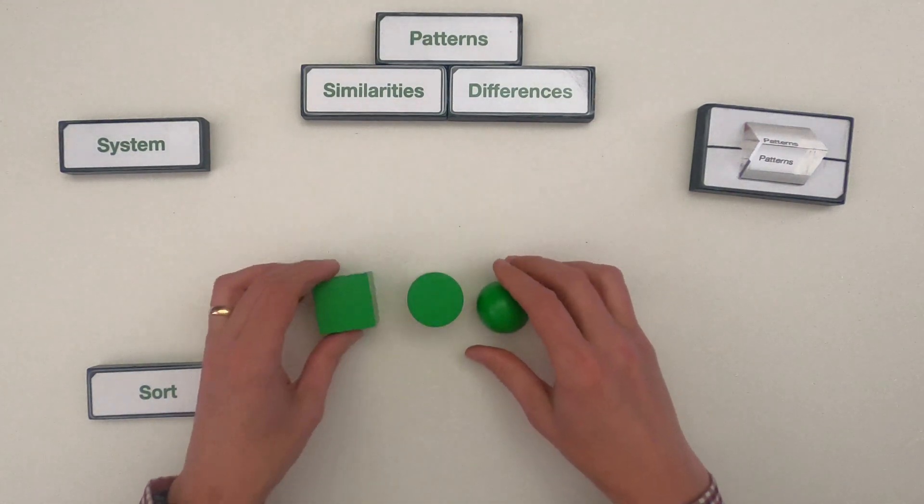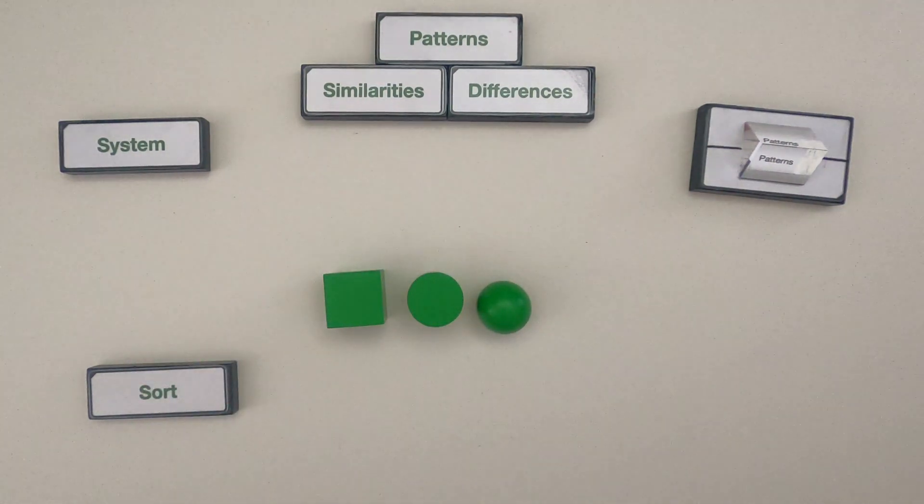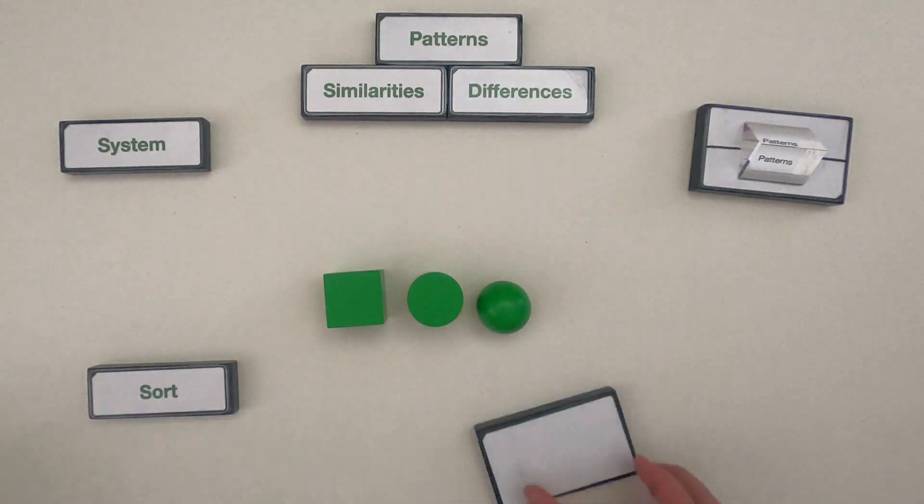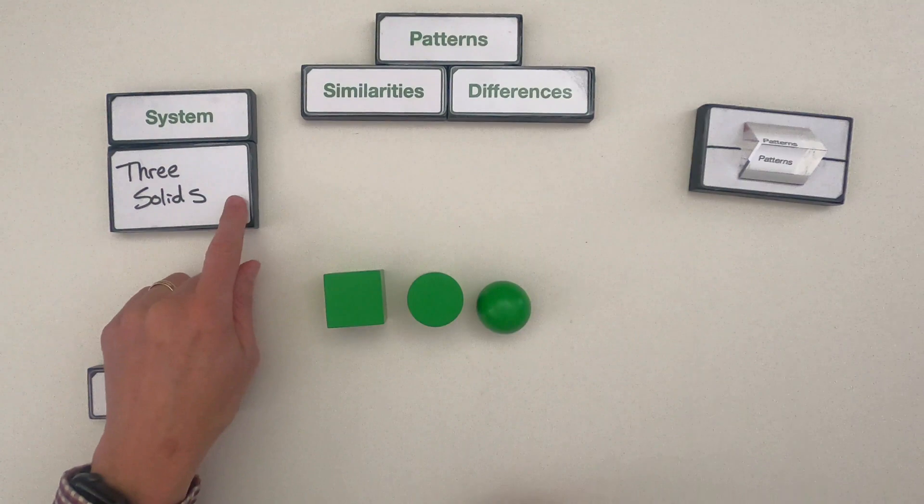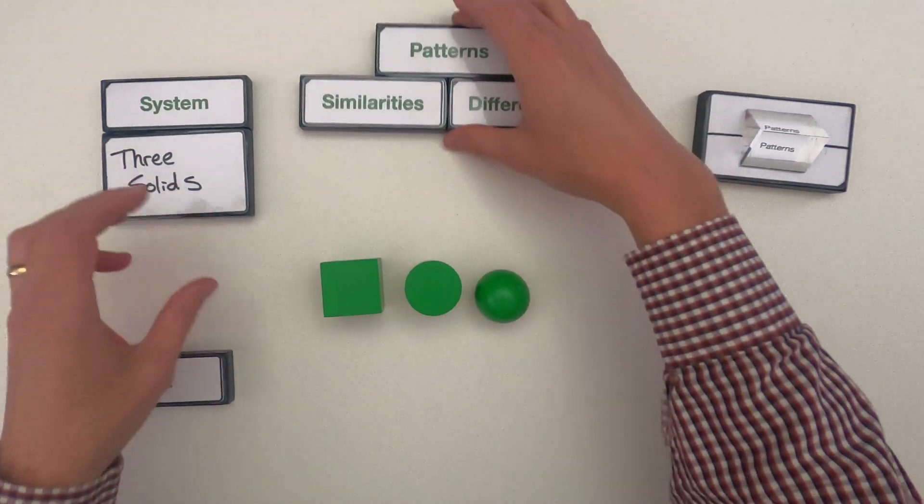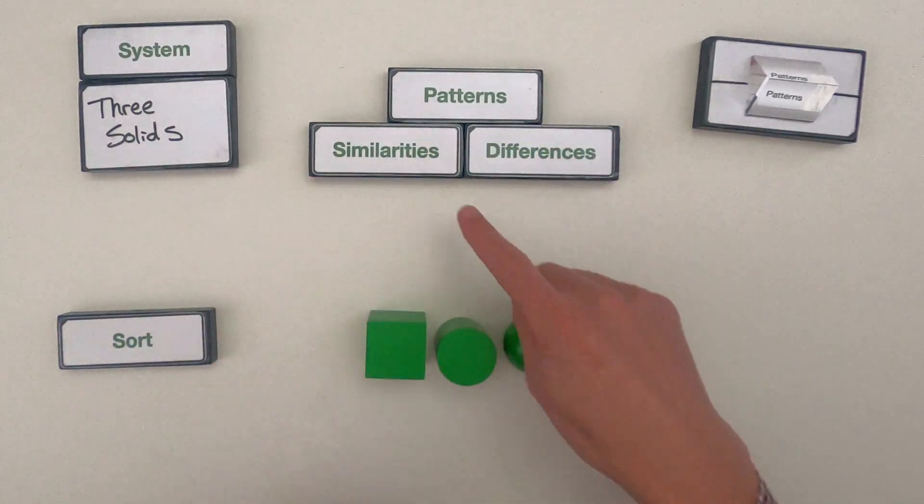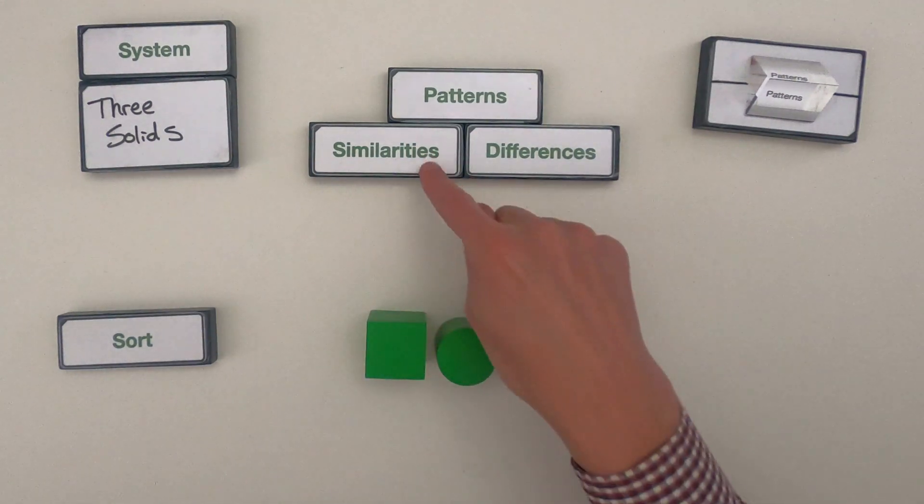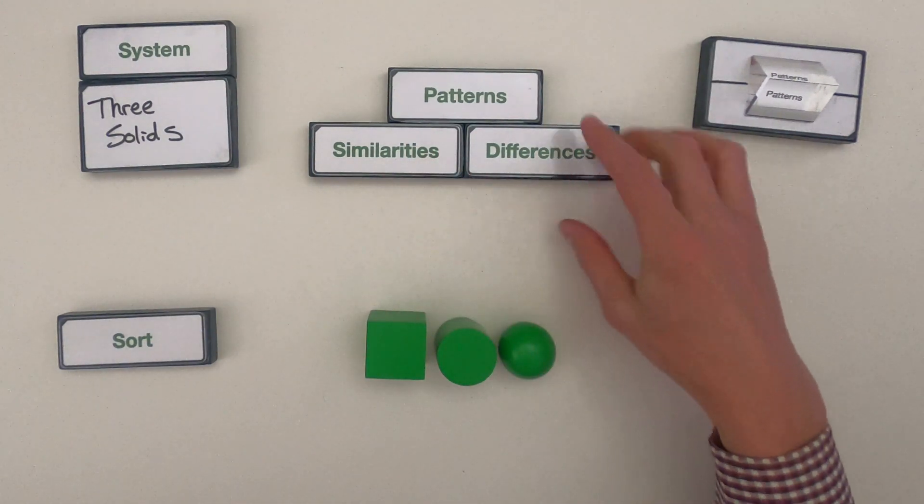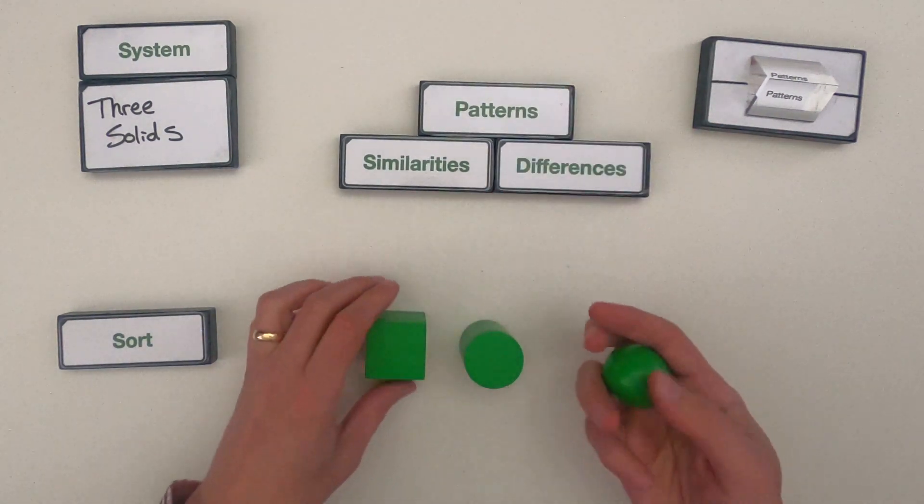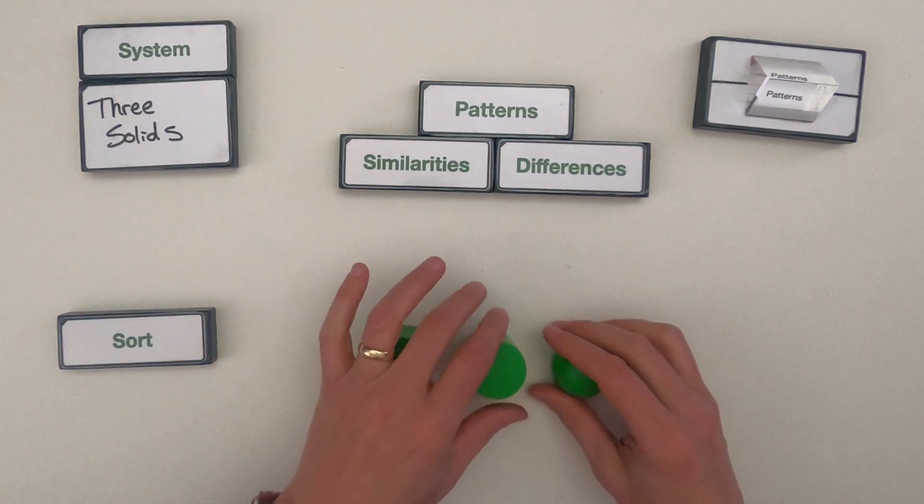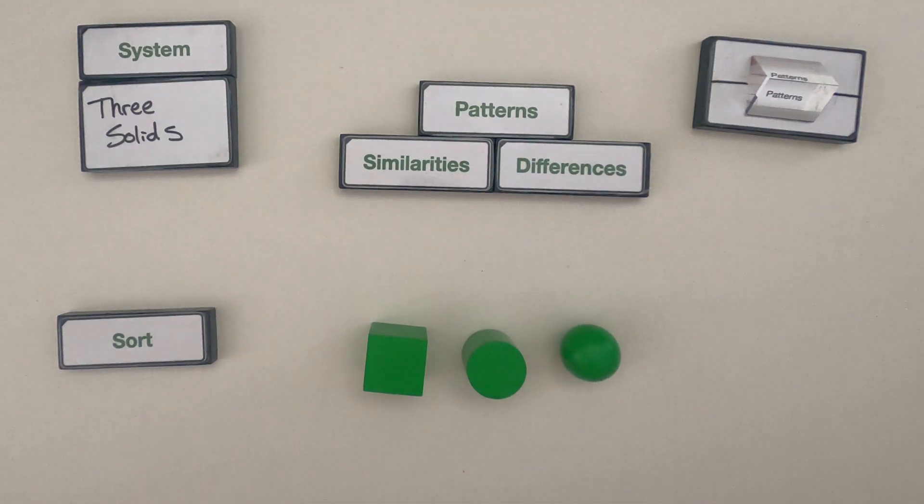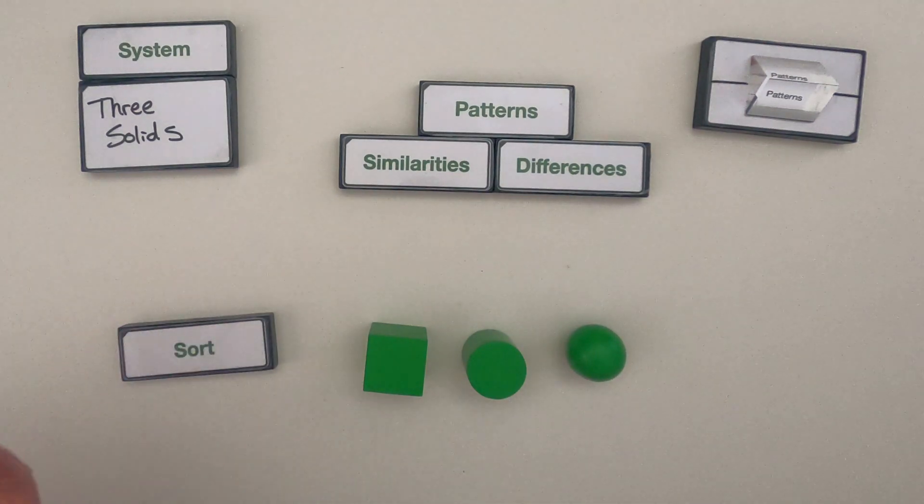So the first thing you should always do when you're looking at a system is define the system. We're going to be looking at the system of these three solids and what we're looking for are just patterns. How are these three solids similar and how are they going to be different? So the first thing I would do is try to figure out they're all made of wood they're all green so I would just start writing down what are some similarities that we could use to sort these.